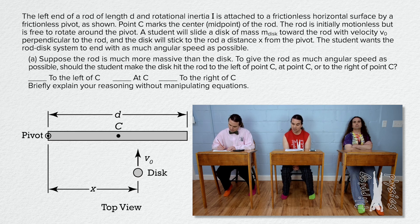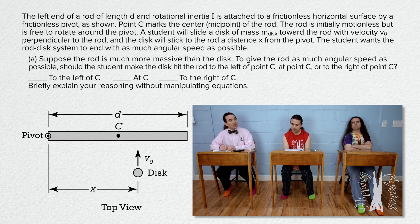The student wants the rod-disk system to end with as much angular speed as possible. Part A: Suppose the rod is much more massive than the disk. To give the rod as much angular speed as possible, should the student make the disk hit the rod to the left of point C, at point C, or to the right of point C? Briefly explain your reasoning without manipulating equations.